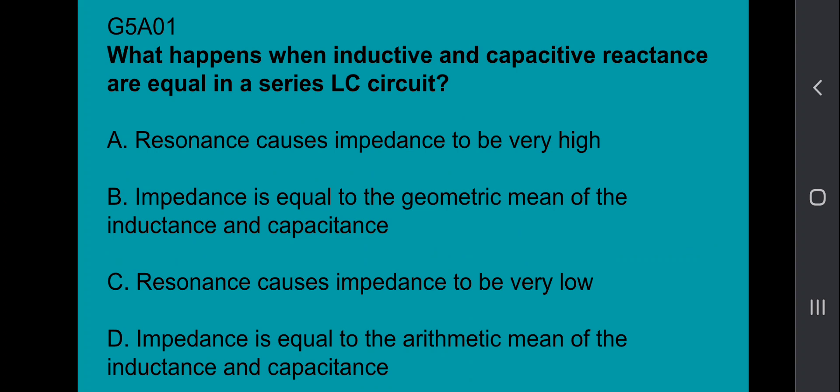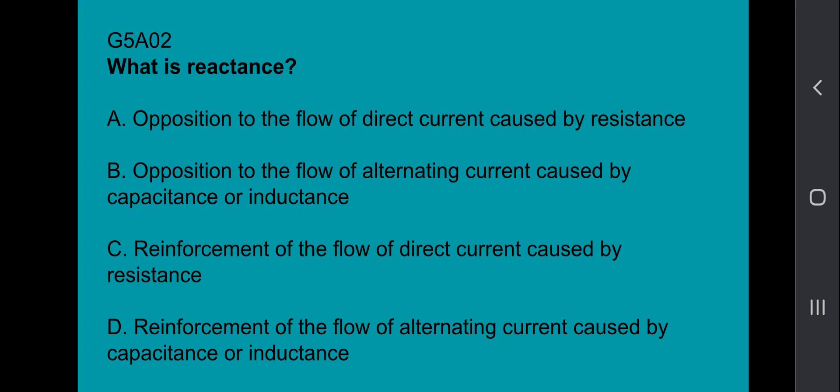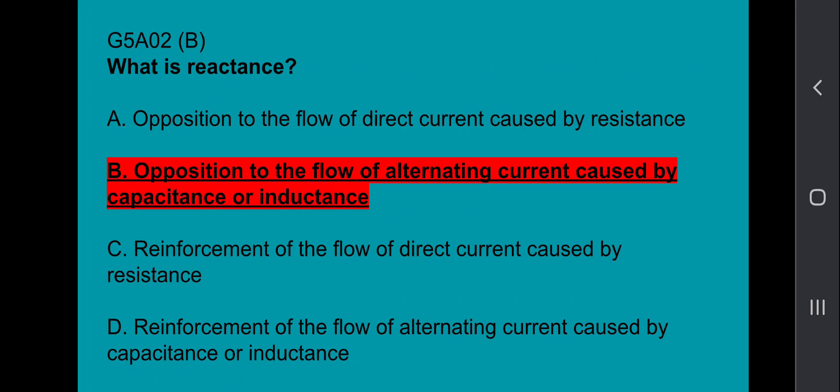G5A01, what happens when inductive and capacitive reactance are equal in a series LC circuit? Resonance causes impedance to be very low. G5A02, what is reactance? Reactance is the opposition to the flow of alternating current caused by capacitance or inductance.